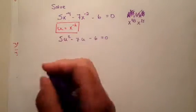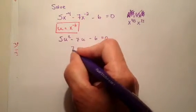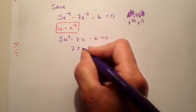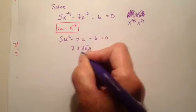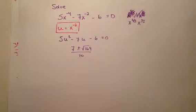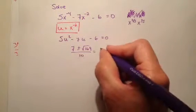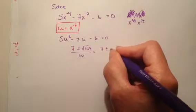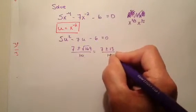When I do the whole quadratic formula, I'm going to assume that you know how to do that. I'm going to end up getting 7 plus or minus square root of 169 over 10. When I simplify that, square root of 169 is 13, so I have 7 plus or minus 13 over 10.